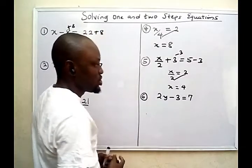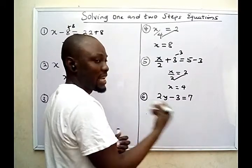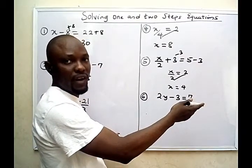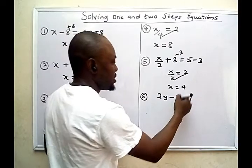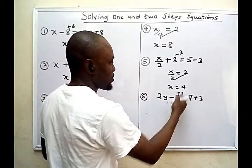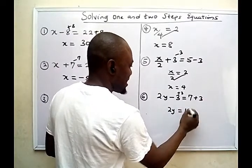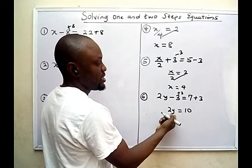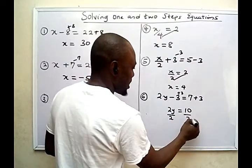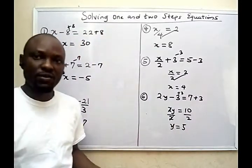In the last problem, I want to find the value of the unknown — all variables on the left-hand side and all numbers on the right-hand side. I have a minus 3 here, so I want to get rid of it by adding 3 to both sides. Minus 3 plus 3 gives me 0, so I have 2y equal to 7 plus 3, which is 10. Since 2y means 2 times y, I divide both sides by 2, and y equals 10 divided by 2, which is 5.